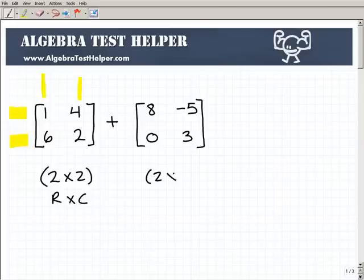This one over here is also a 2 by 2 matrix. So if you're trying to add two matrices that have the exact same number of rows and columns, then you can do it. If they don't have the exact same numbers of rows and columns, then you cannot add or subtract your matrices.